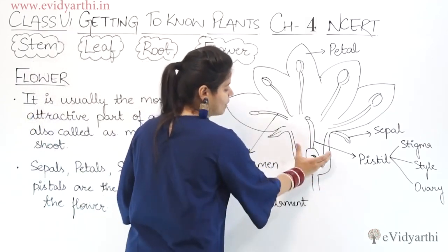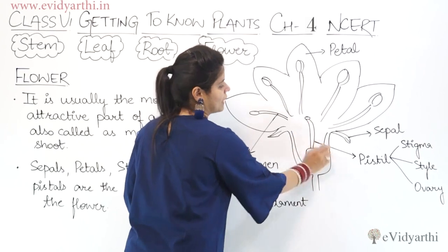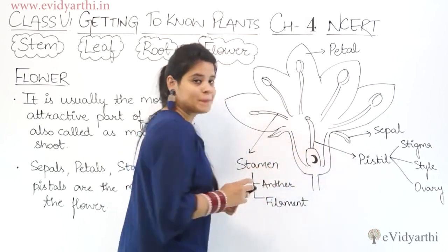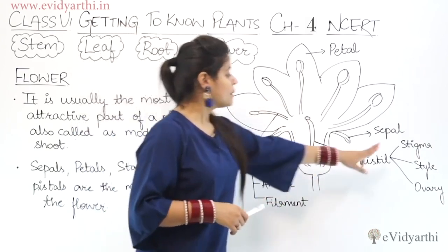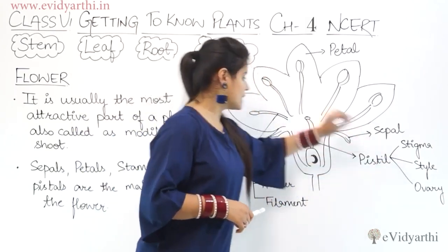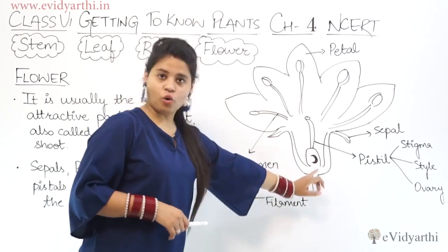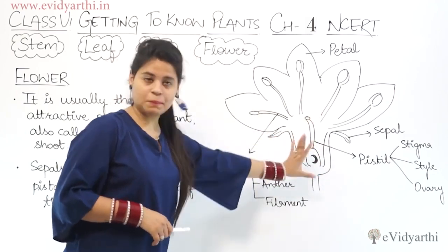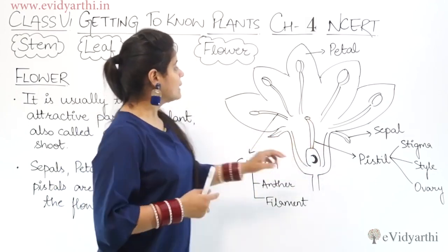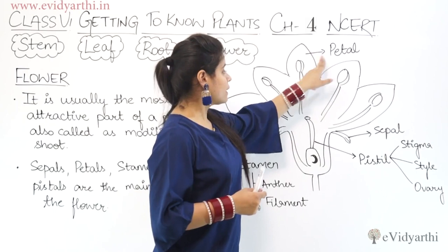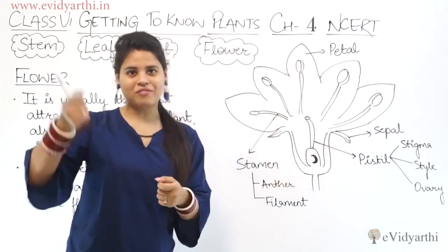This part here is the flower. This is the pistil. There are three things in the pistil: stigma, style, and ovary. We will revisit this figure. Then this part — there are petals. I hope you all know.